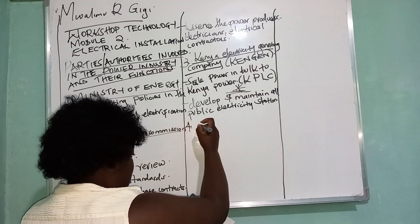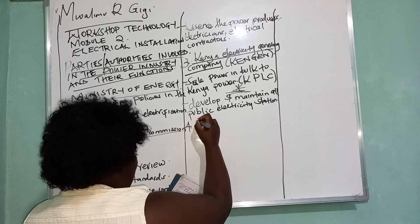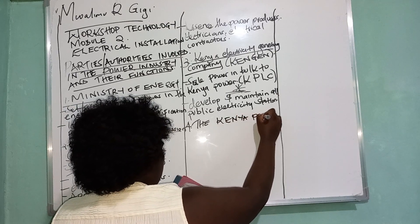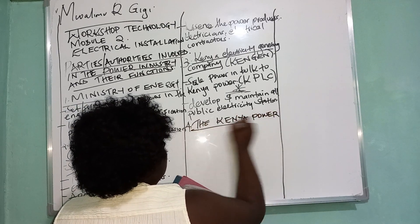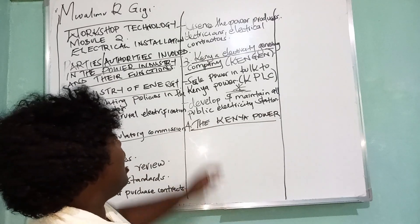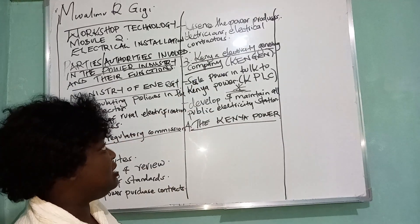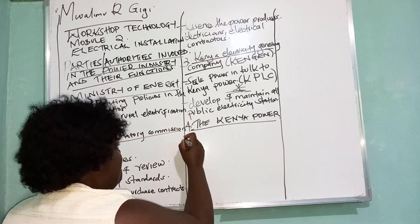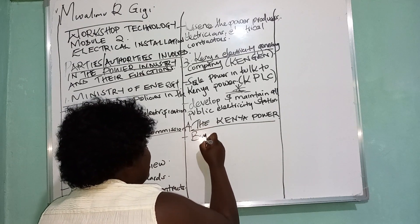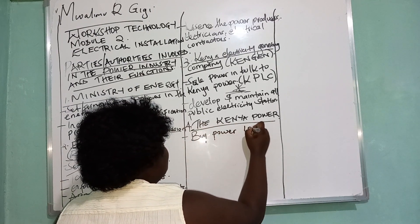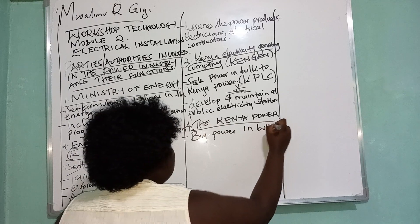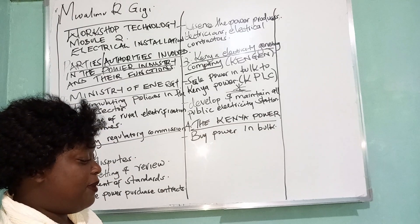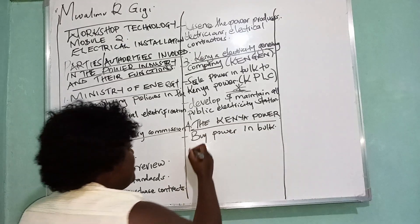The party we can say is the Kenya Power. So what is the work of the Kenya Power? They are the ones who sell power in bulk. The Kenya Power — the first thing they do — they buy power in bulk from private or public generating companies.